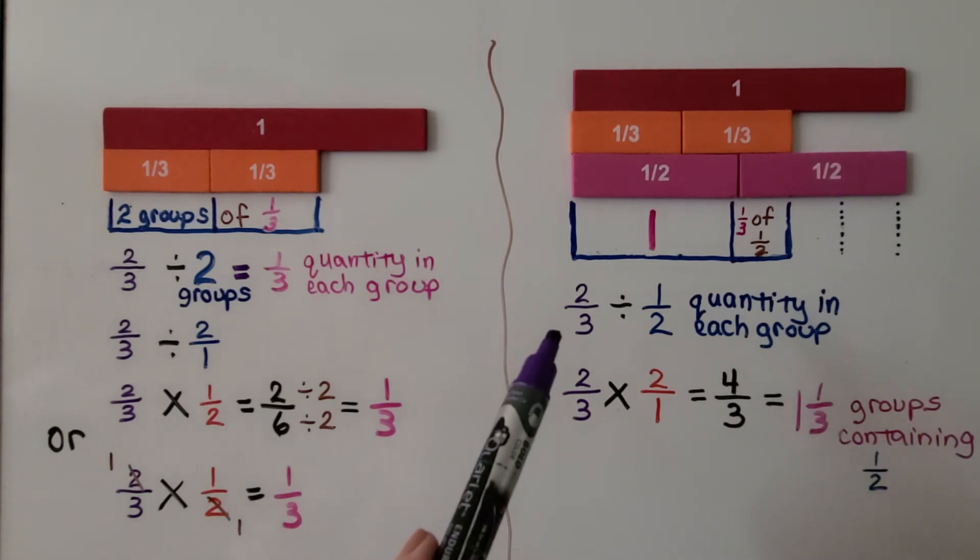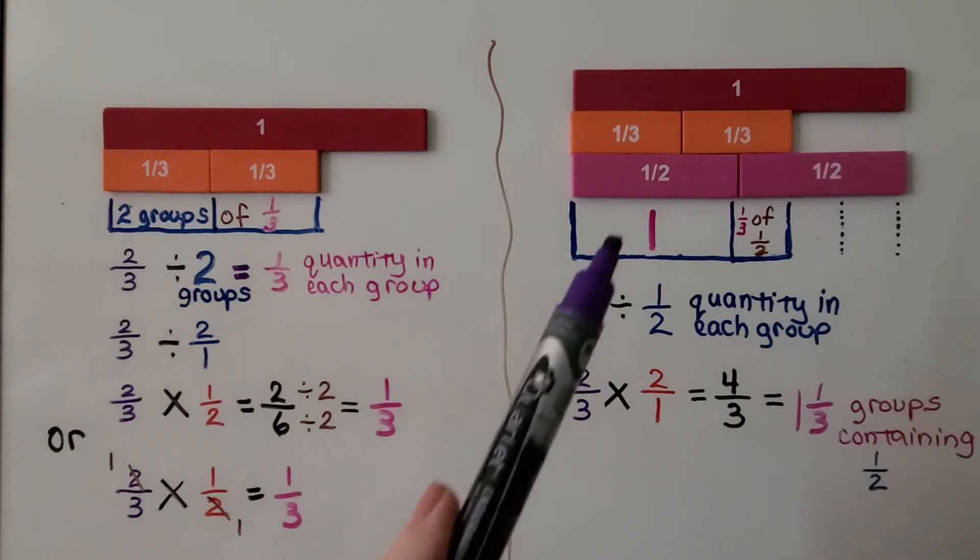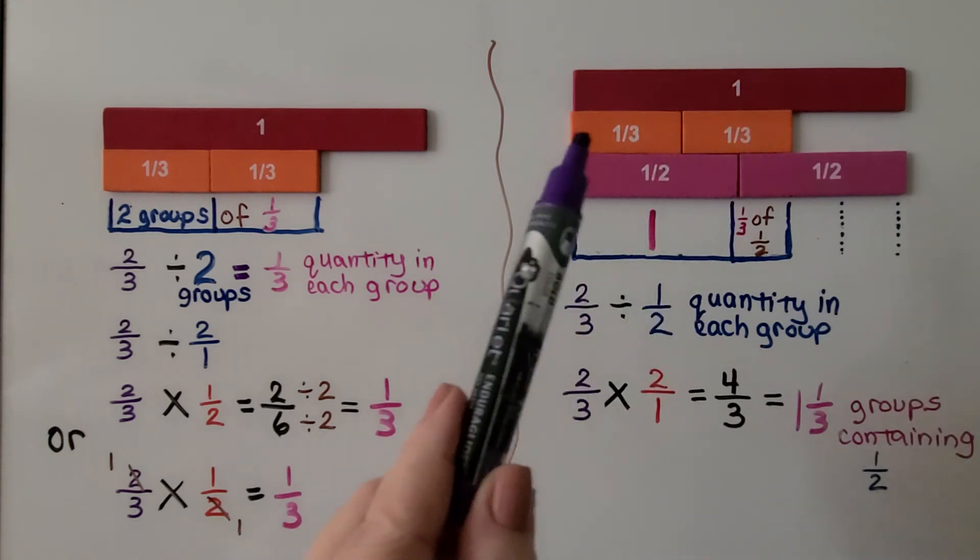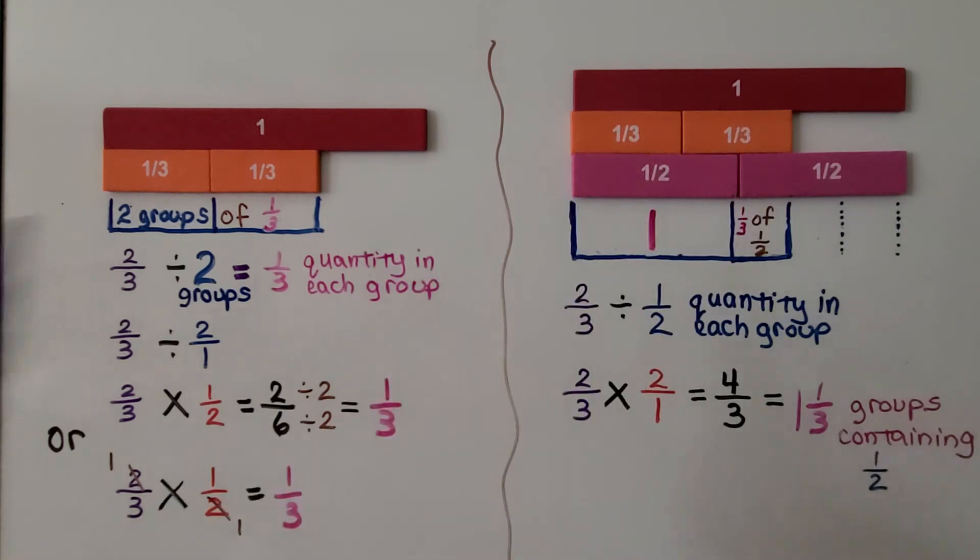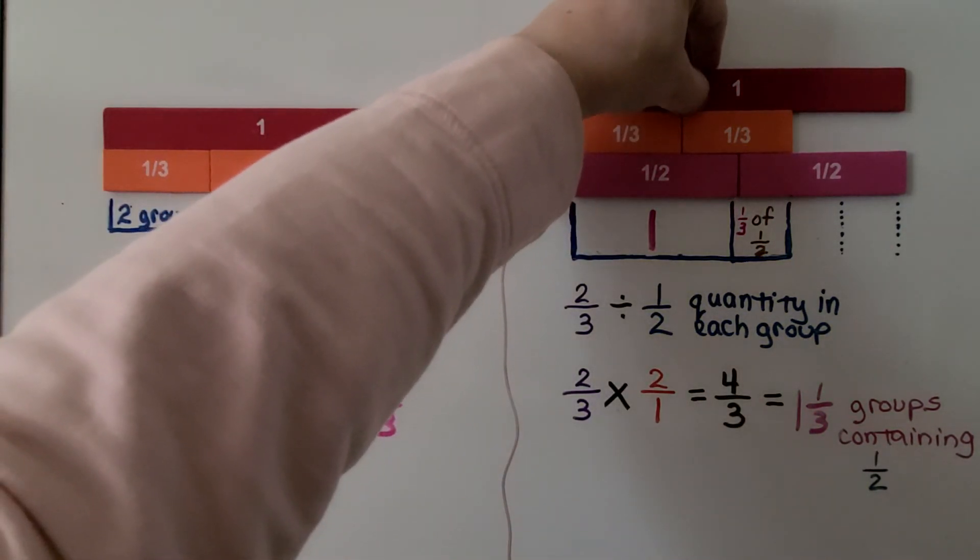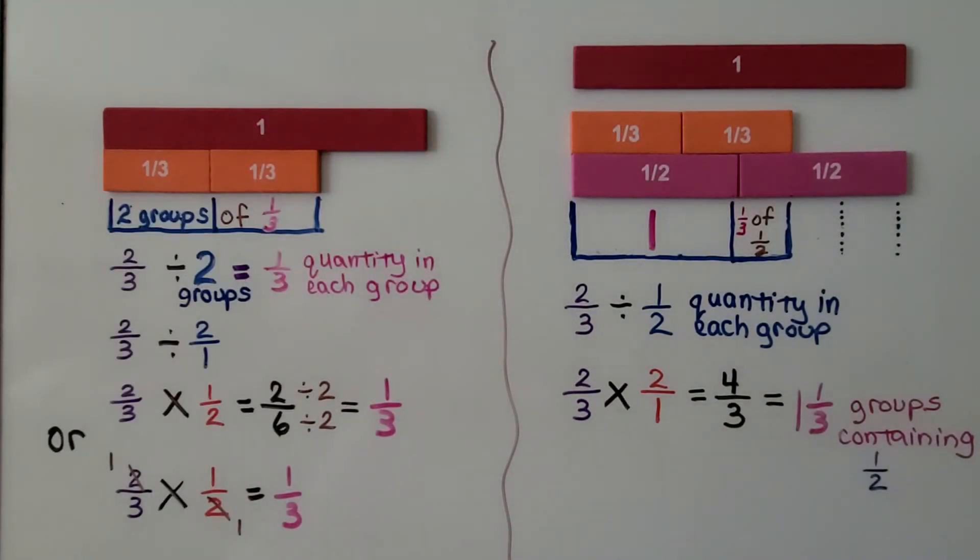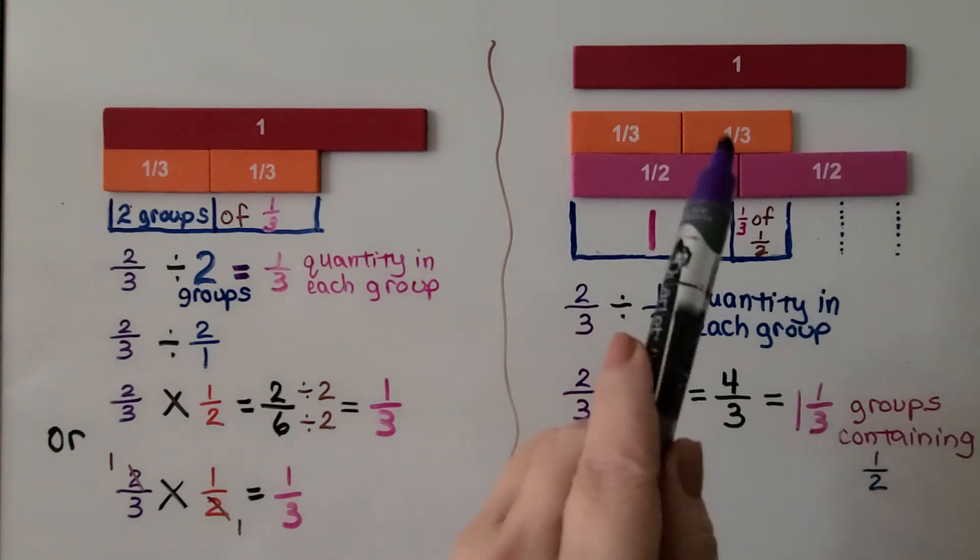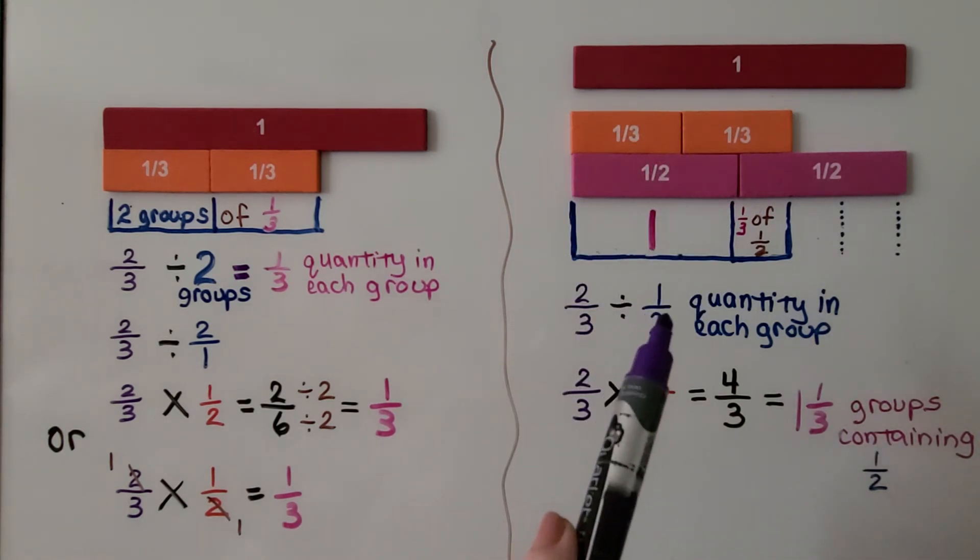Now look what happens if we do ⅔ divided by ½. We have ⅔ right here. That's our total. We have ⅔, and we want to divide it by ½. That's going to be the quantity in each group.